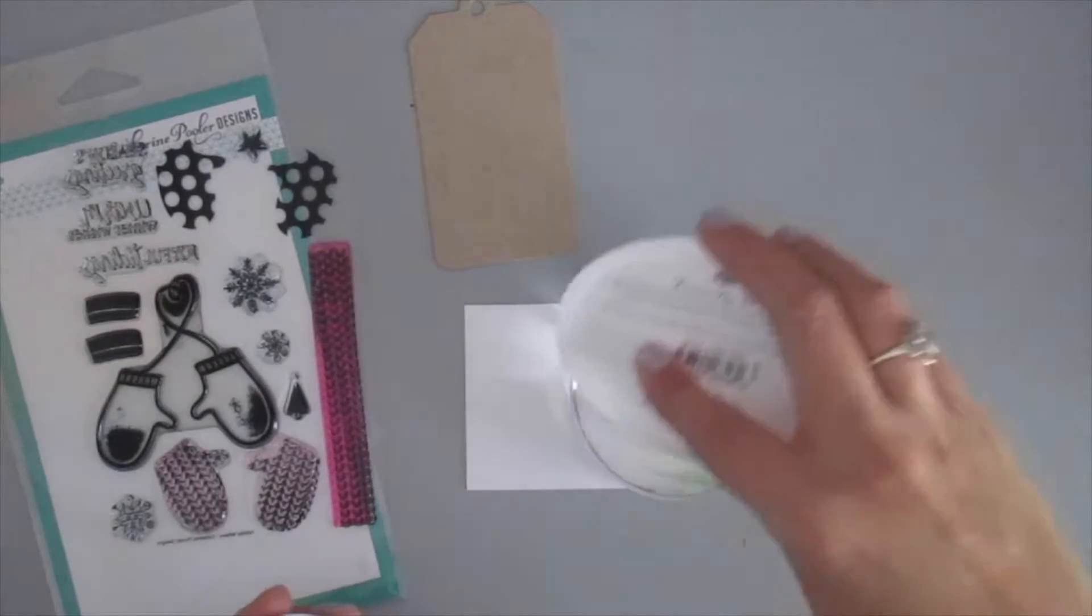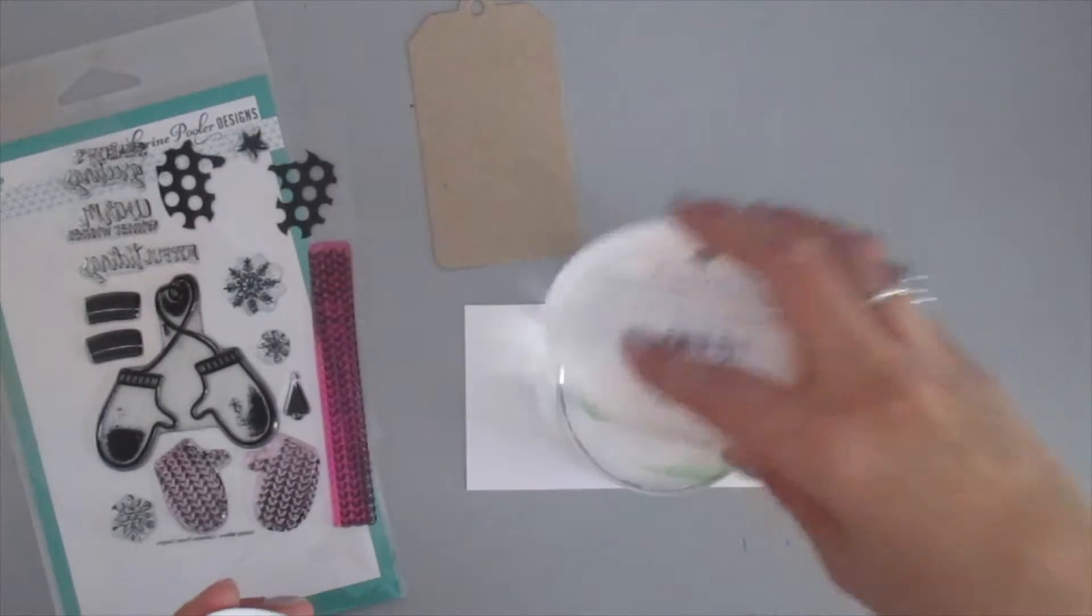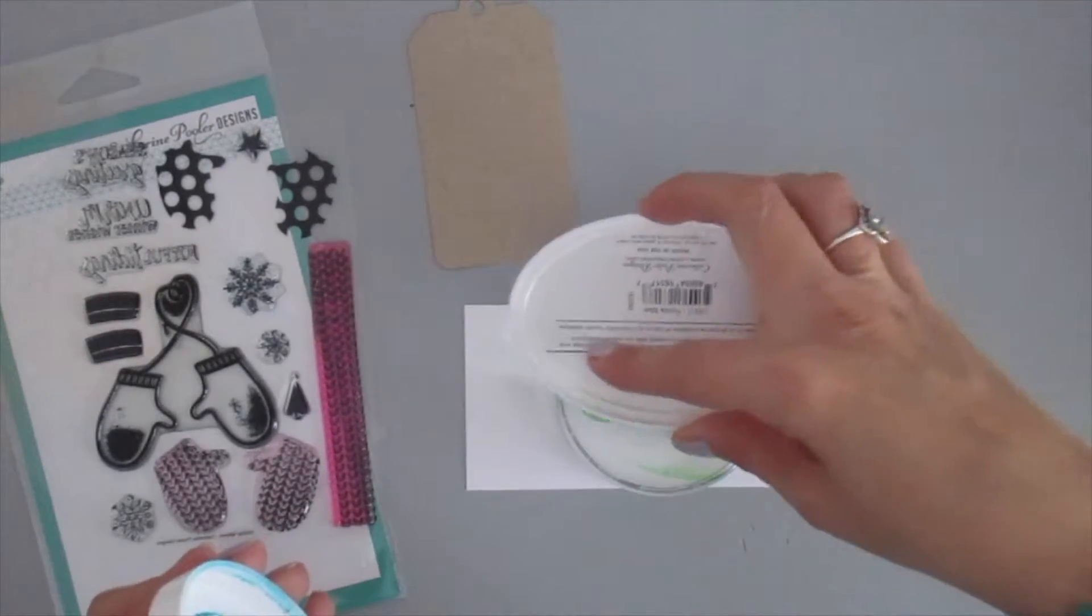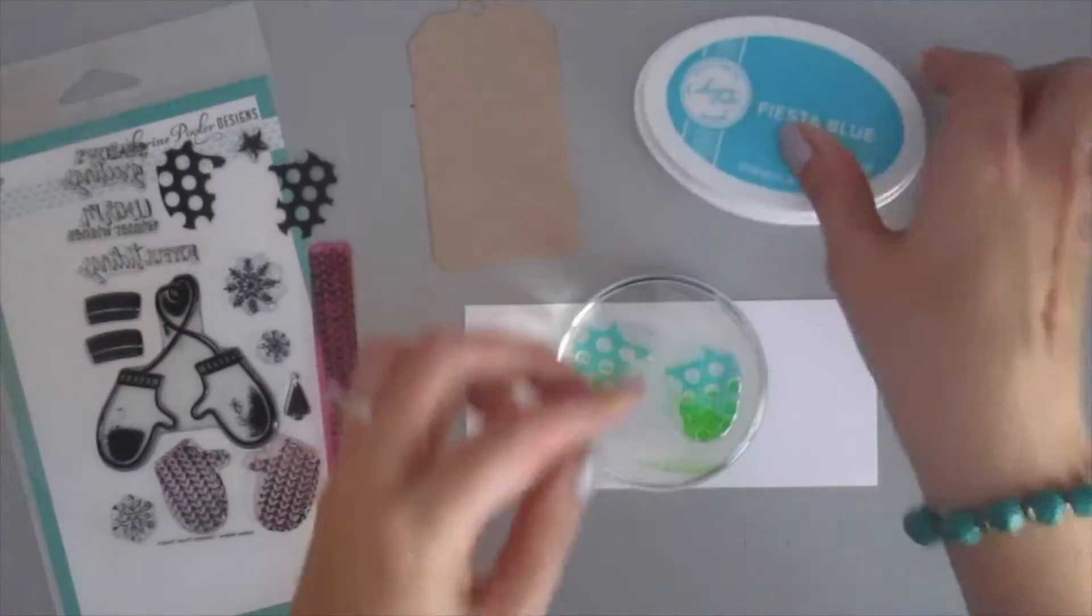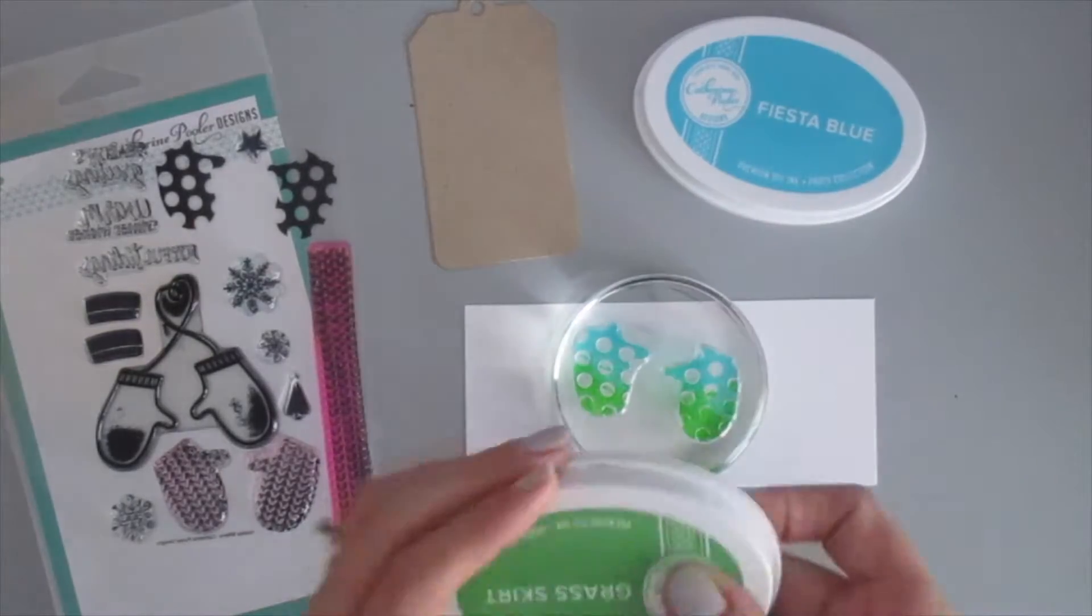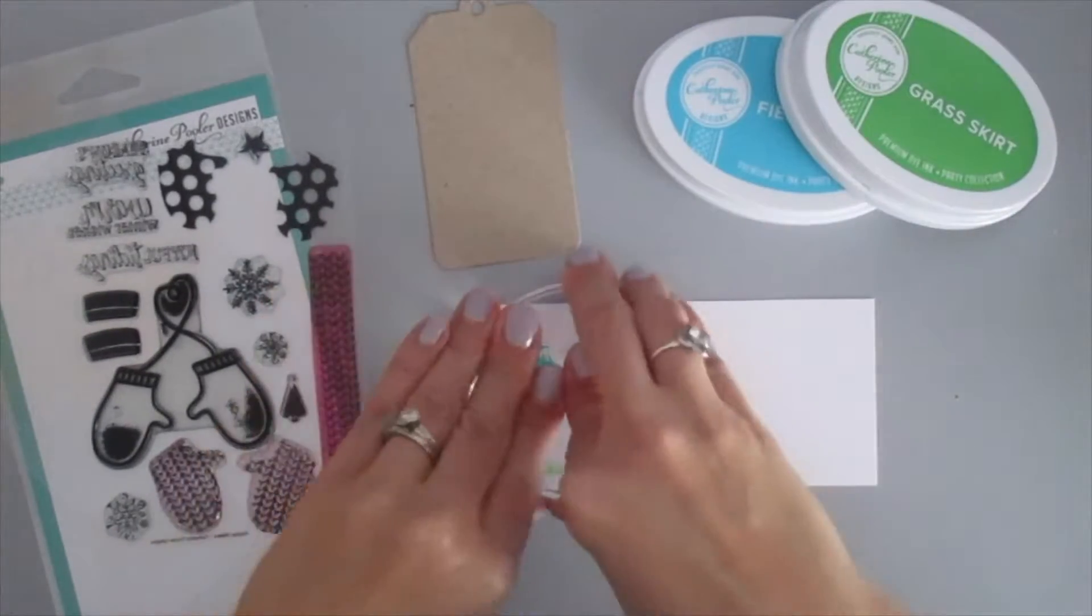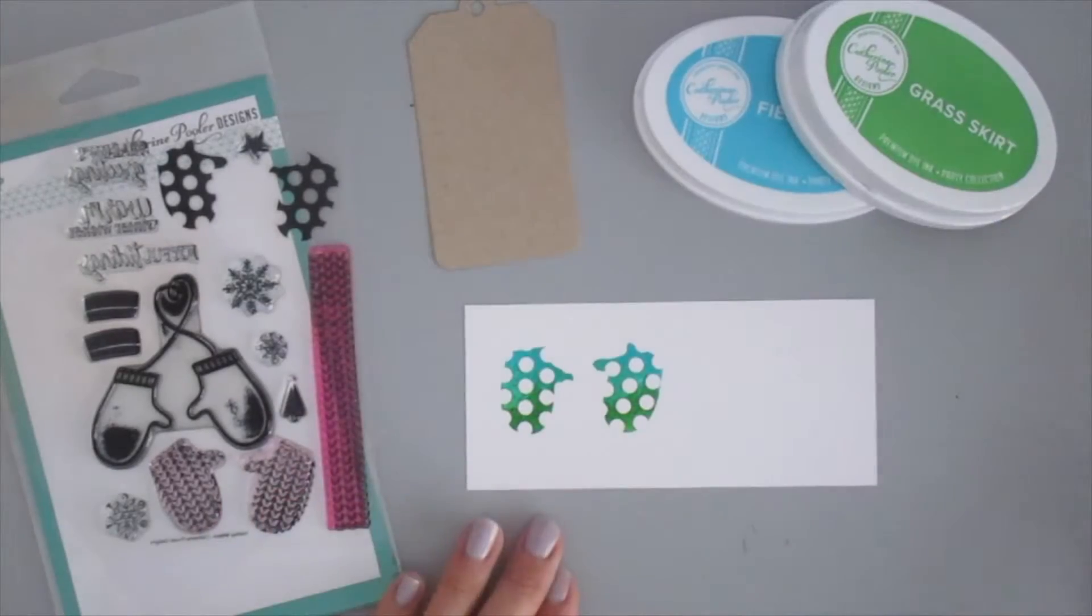So you can see I am inking up the mittens here and I'm using two different Katherine Pooler inks. So I went in with the blue first and then I came back in with the green. I want to create a blended ombre type effect and I'm using Grass Skirt and Fiesta Blue.